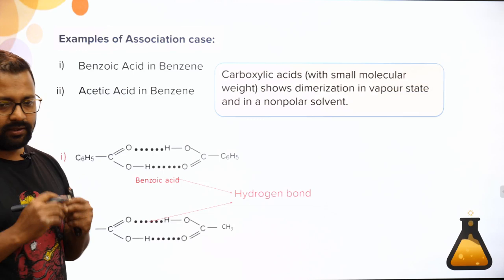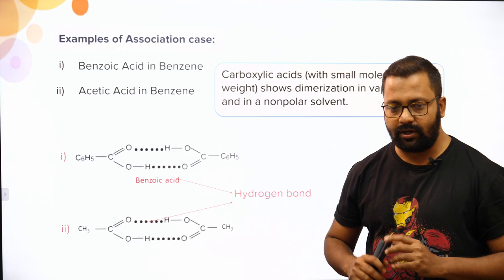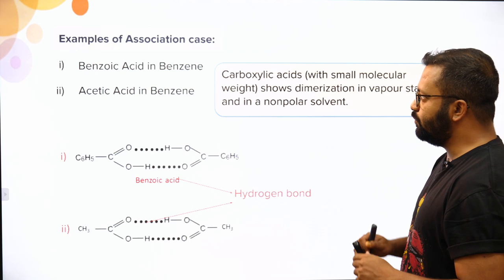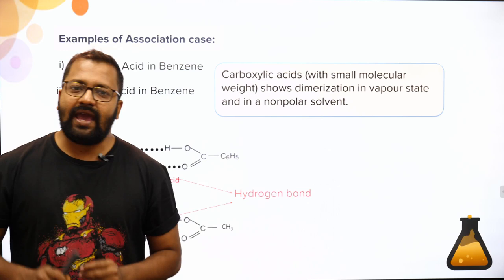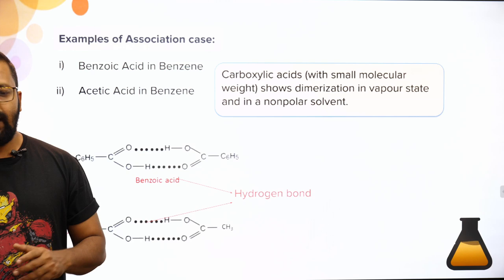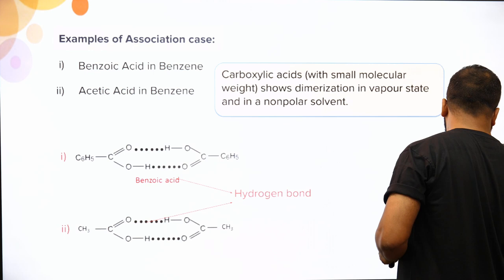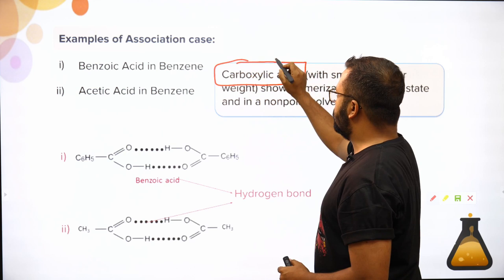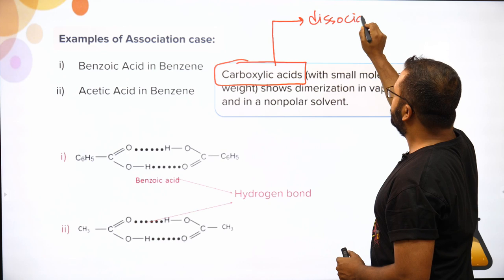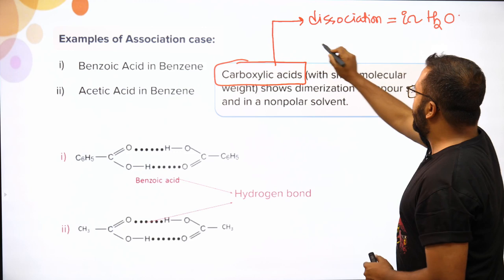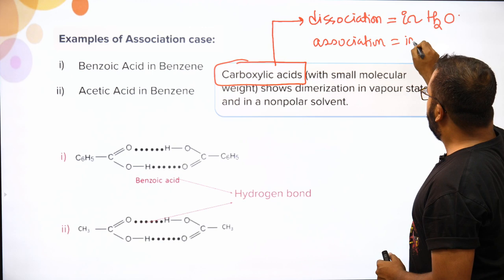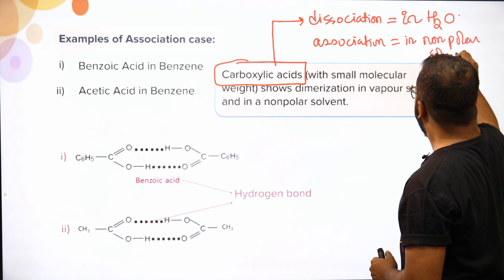There are certain specific cases for association that are very important. The classic example is benzoic acid in benzene. Remember: any carboxylic acid can show either association or dissociation. Association takes place in non-polar solvents or in the vapour state. Carboxylic acids will undergo dissociation in water and association in non-polar solvents.